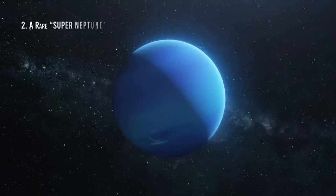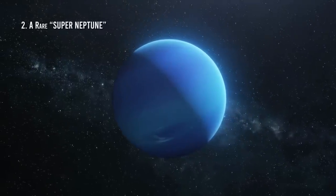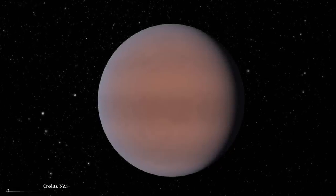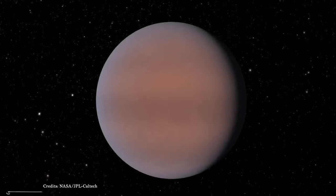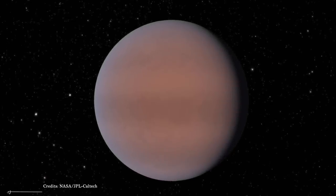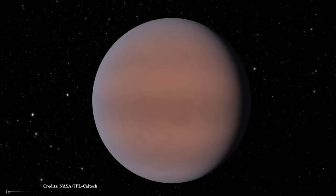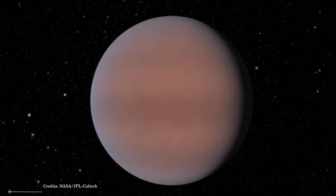Number 2: A Rare Super-Neptune. Astronomers discovered a Super-Neptune, a planet somewhat bigger than Neptune, with water vapor in its atmosphere 150 light-years away from Earth. That is unusual.